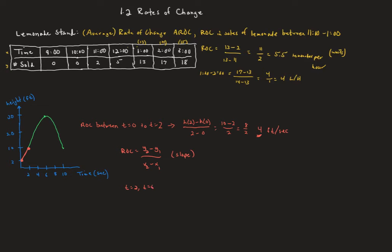Let's do t equals 2 to t equals 6. The height at time 6 minus the height at time 2, over 6 minus 2: height at t=6 is 30, height at t=2 is 10, and 6 minus 2 is 4. That's 20 divided by 4, which is 5 feet per second as the average rate of change — that's the slope of the line joining those two points on the curve.